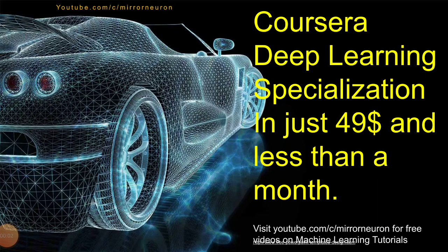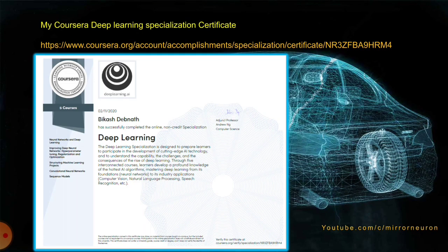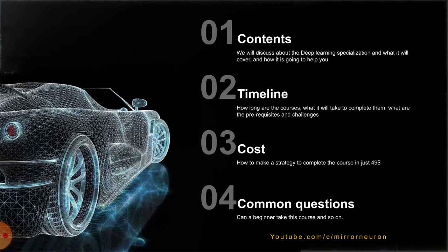Welcome back to our channel Mirror Neuron, which means watch and learn. I've put my certificate here just to let you know that I have actually completed it and am not just making it up. A certificate is not worth more than a piece of paper unless you've actually learned what the course teaches. In this video we'll cover: what topics are in the specialization and how they'll help you, the timeline I followed to complete it in under a month, how it costs no more than $49, and whether a beginner can take this course.